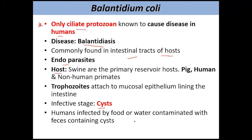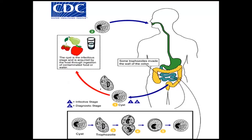Infection occurs through food or water contaminated with feces containing cysts. If we eat food contaminated with the cysts of Balantidium coli, we can get the disease. The Balantidium coli life cycle is a direct life cycle, involving only one host — the human.